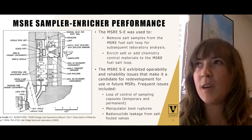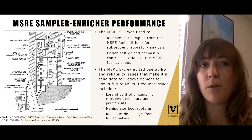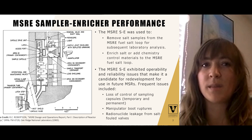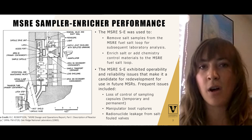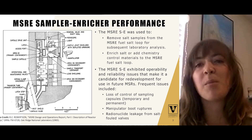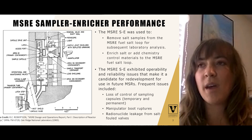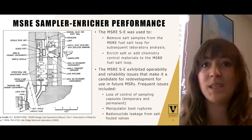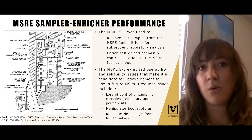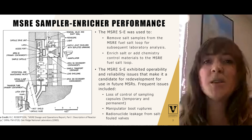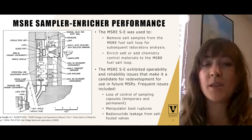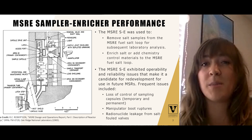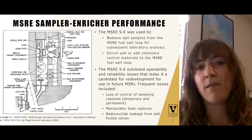The sampler-enricher was essentially a winch and capsule-based sampling system complete with purge and off-gas connections. The system was capable of removing salt samples from the MSRE's fuel salt pump bowl, as well as adding enriching salt or chemistry control materials to the MSRE fuel salt loop through the pump bowl. The MSRE pump bowl was the high point in the fuel salt loop, and thus the sampler-enricher was also used in attempts to take gas samples from this expansion volume.